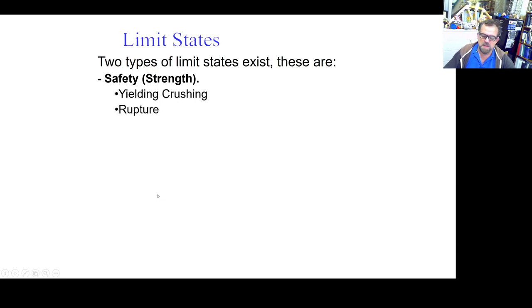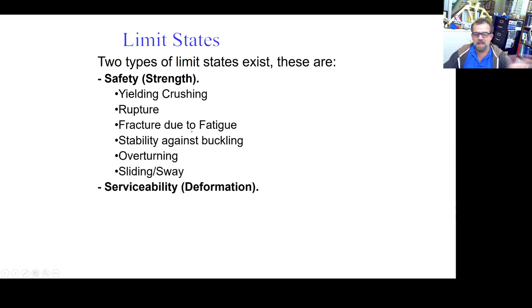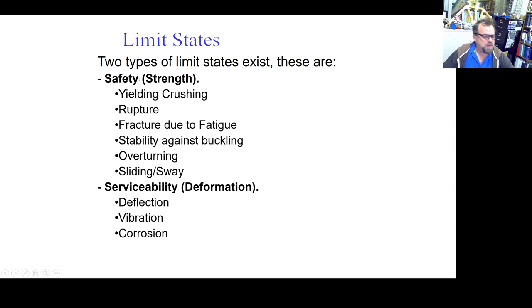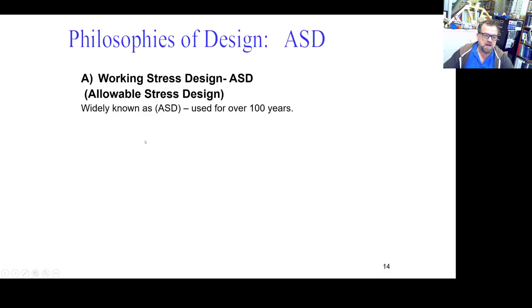There are basically two types of limit states: the ones that imply safety itself, and what I define as comfort or serviceability limit states. The safety ones include yielding, rupture, fracture, stability, overturning, sliding, drifting, et cetera — everything that can induce a collapse in the structure. The second type, called serviceability, includes deformation, deflection, vibrations, corrosion, et cetera. Go to the previous lecture to see the full discussion.